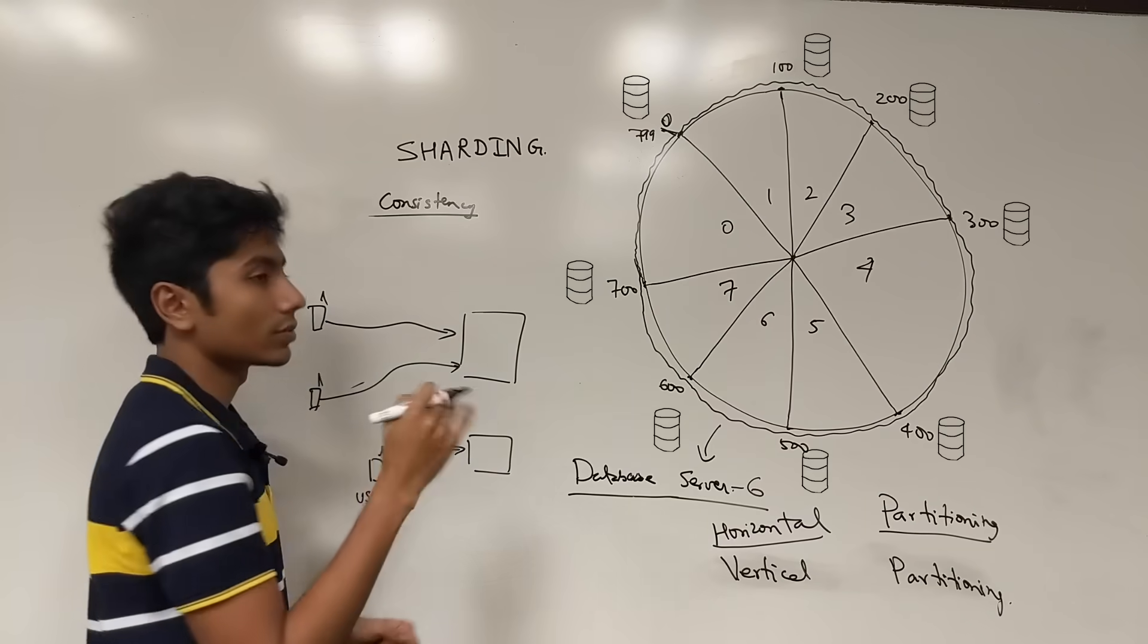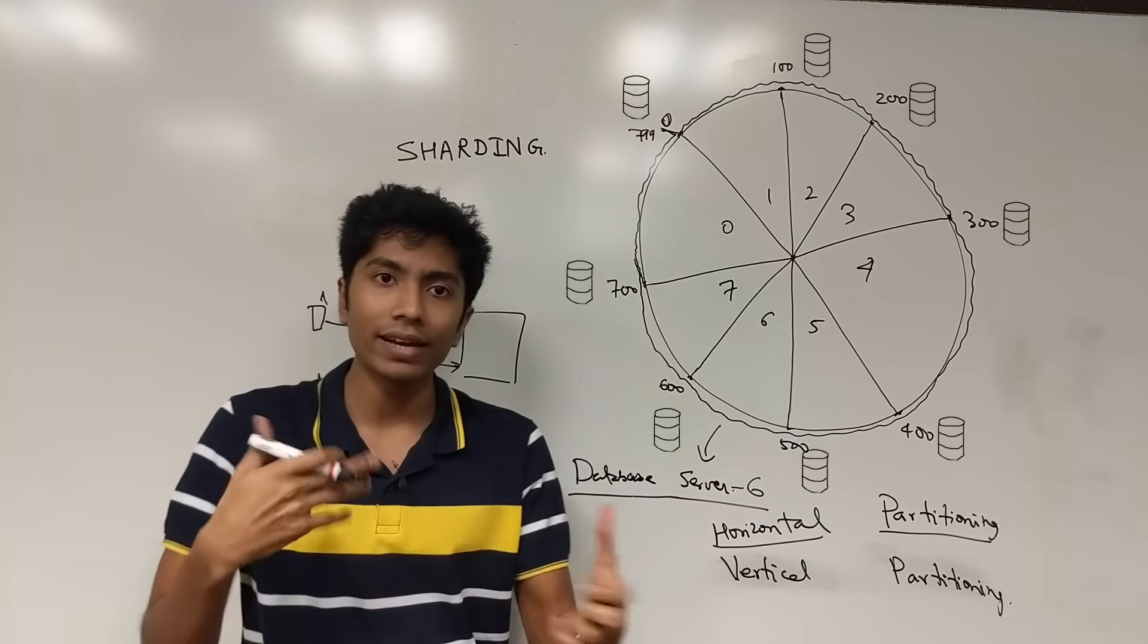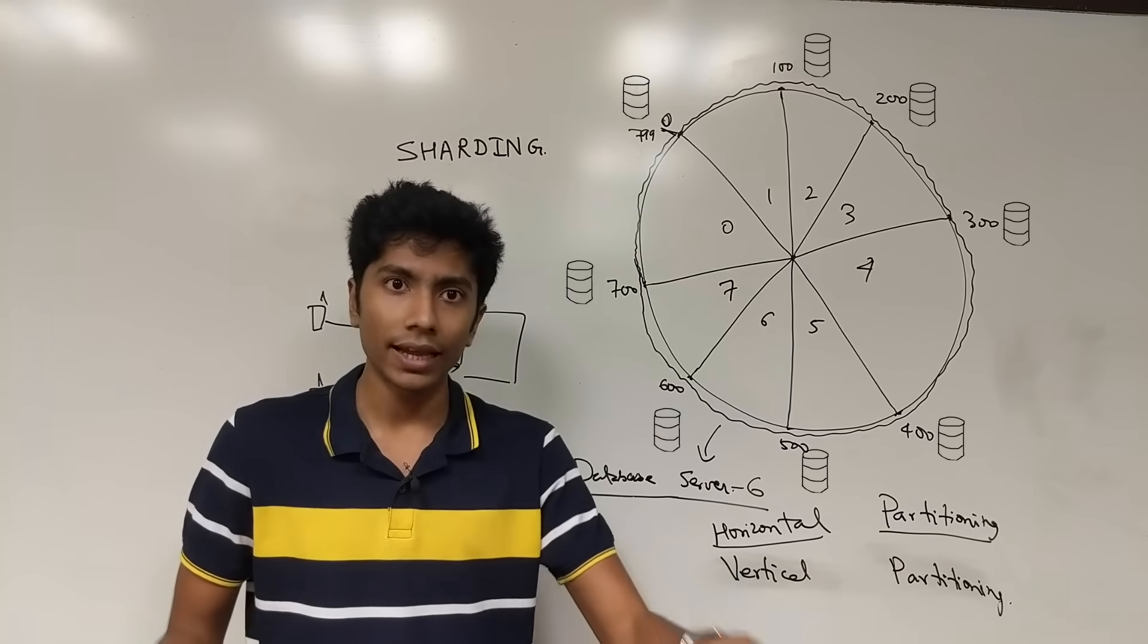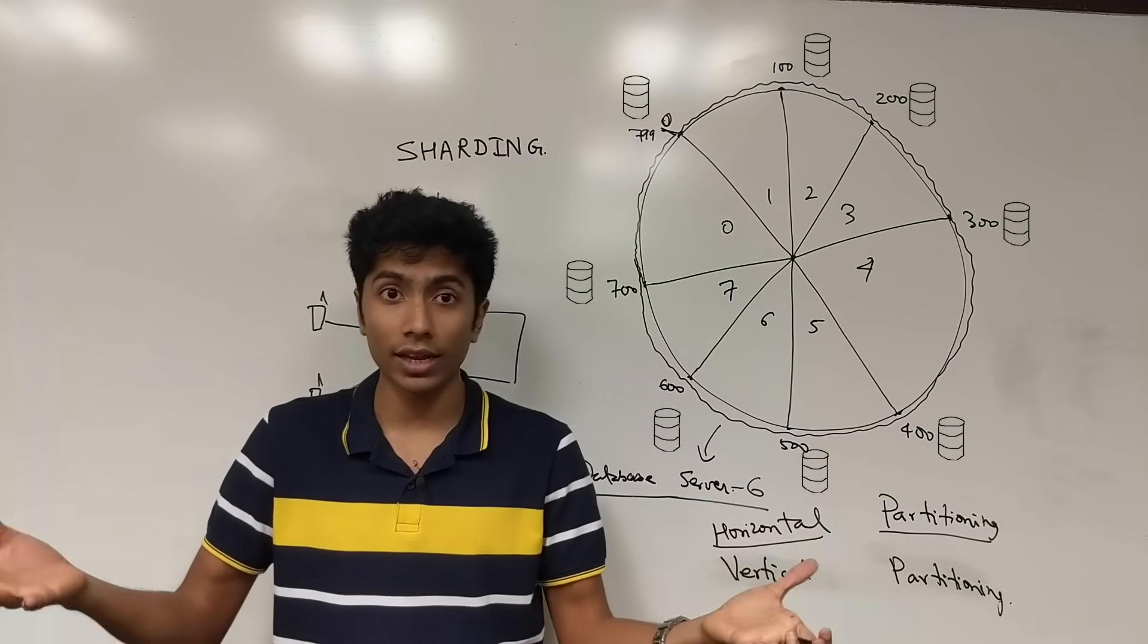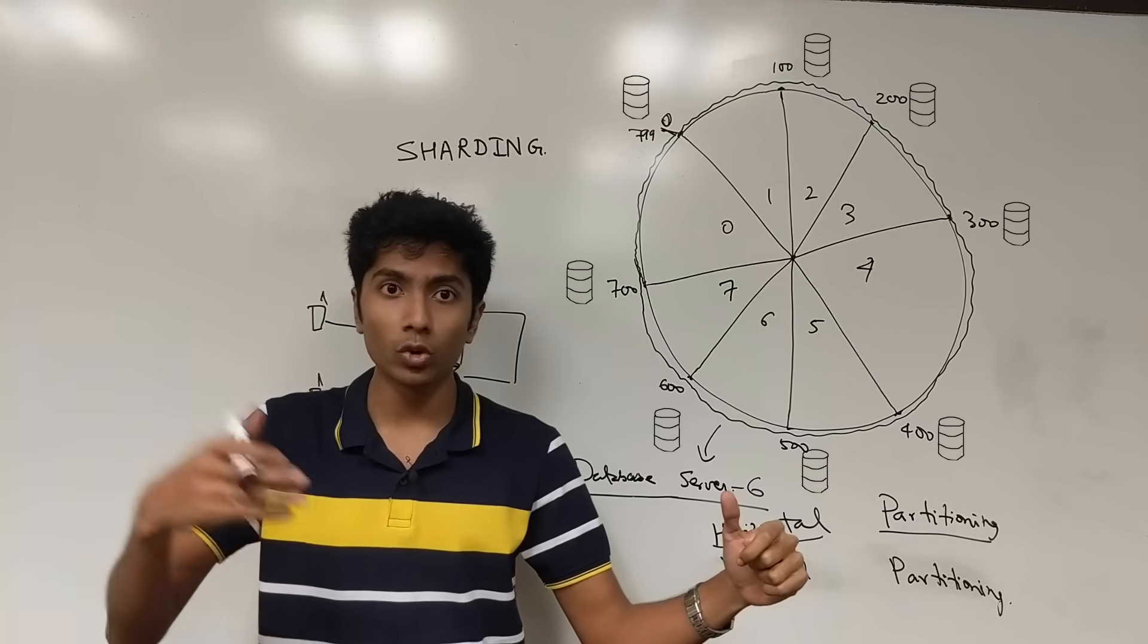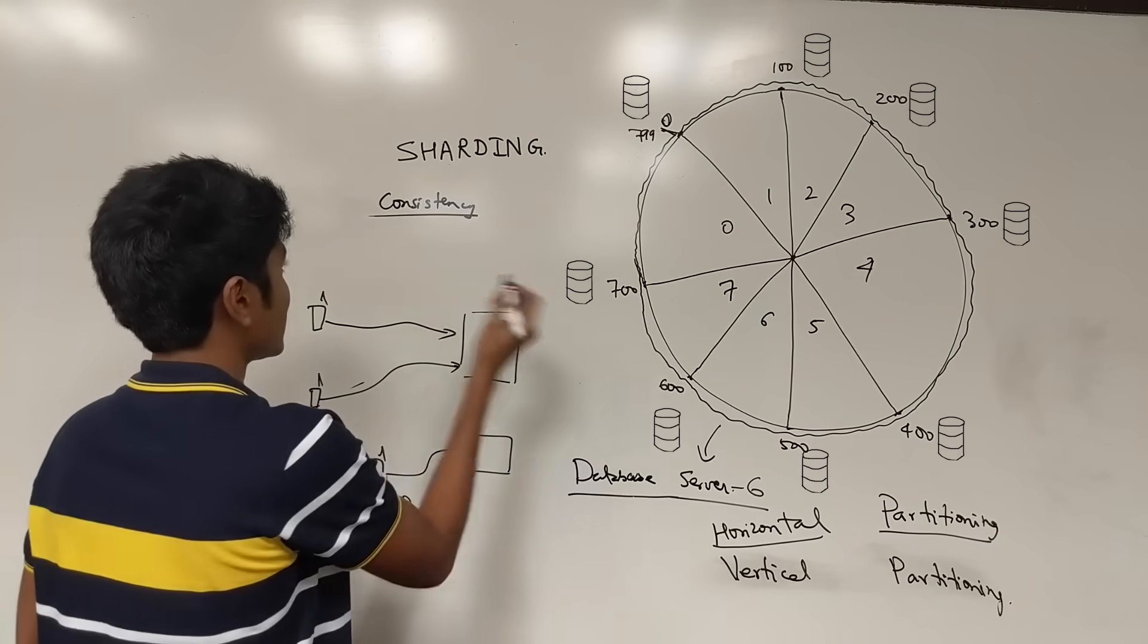Consistency is important. This is one of the key attributes of any database that whatever data you persist in it is what you can read out of it later on and there is some sort of synchronization that if a person makes an update, the new request is going to read that update. Okay, so that is consistency.